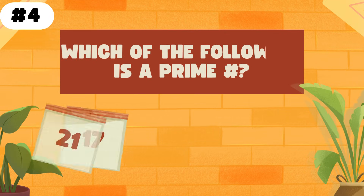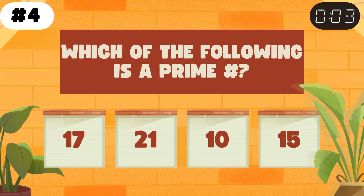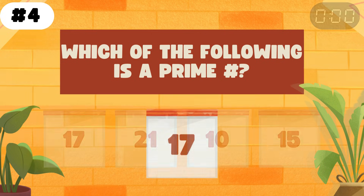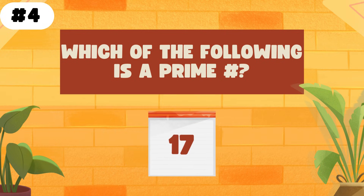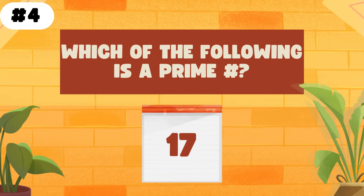Which of the following is a prime number? The answer is 17. A prime number is a natural number greater than 1 that has exactly 2 positive divisors.